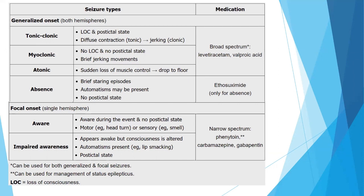Focal onset seizures, or single hemisphere seizures, are of two types: focal onset with intact awareness and focal onset with impaired awareness. Focal onset with intact awareness means the patient is conscious during the seizure with no post-ictal state. Impaired awareness is when the person appears awake but consciousness is actually altered, and there is a post-ictal state. For focal onset seizures, we administer narrow-spectrum drugs like phenytoin, carbamazepine, or gabapentin.